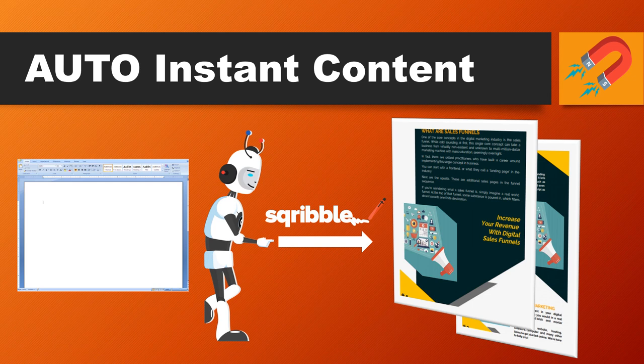This is a massive feature of Scribble. Scribble will allow you to populate your entire e-book with automatic, instant content. This is the big one. They've got an incredible content engine — with just a few clicks it's going to fill out your entire e-book.